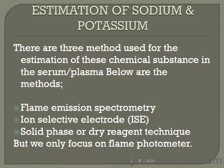Now, first we are going to look at the estimation of sodium and potassium. There are three methods that can be used for estimating potassium and sodium in the blood system: number one, flame emission spectrometry; second, ion selective electrode; third, solid phase or dry reagent techniques.